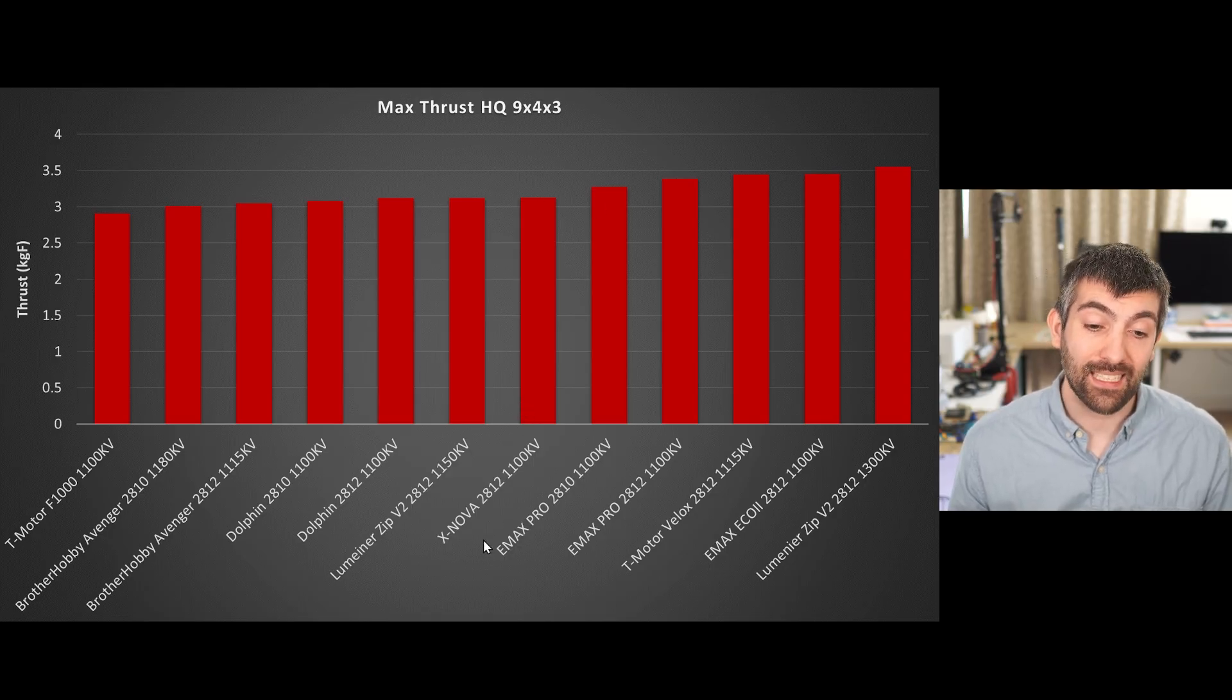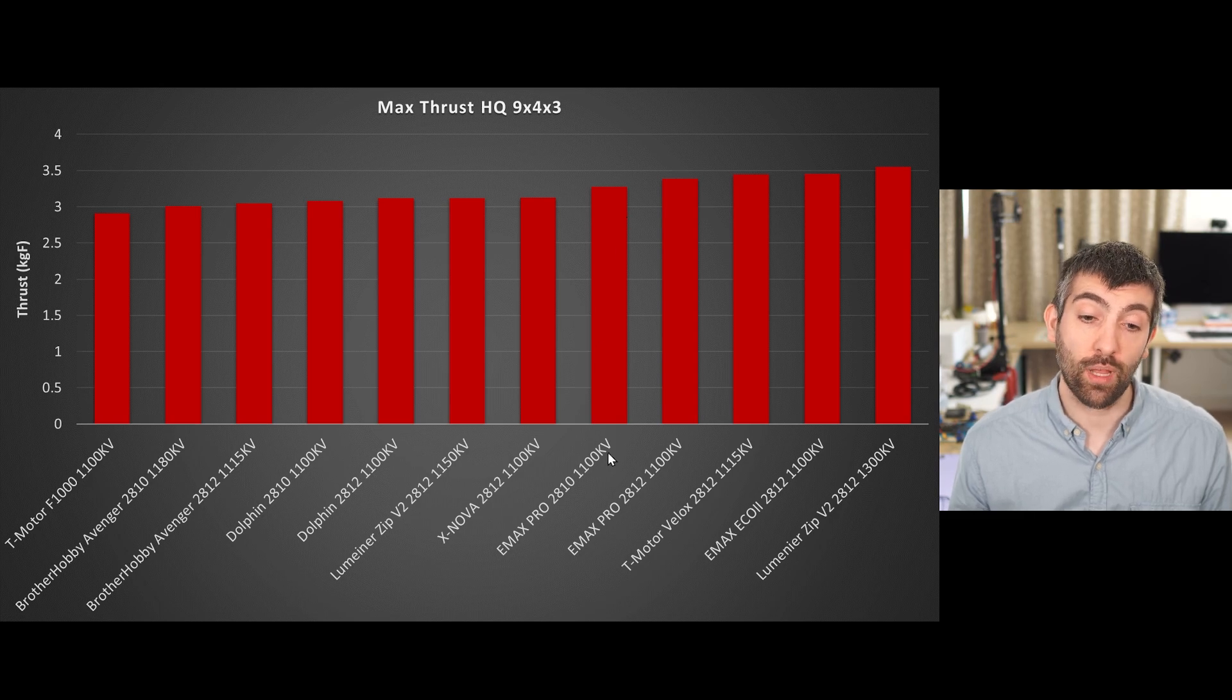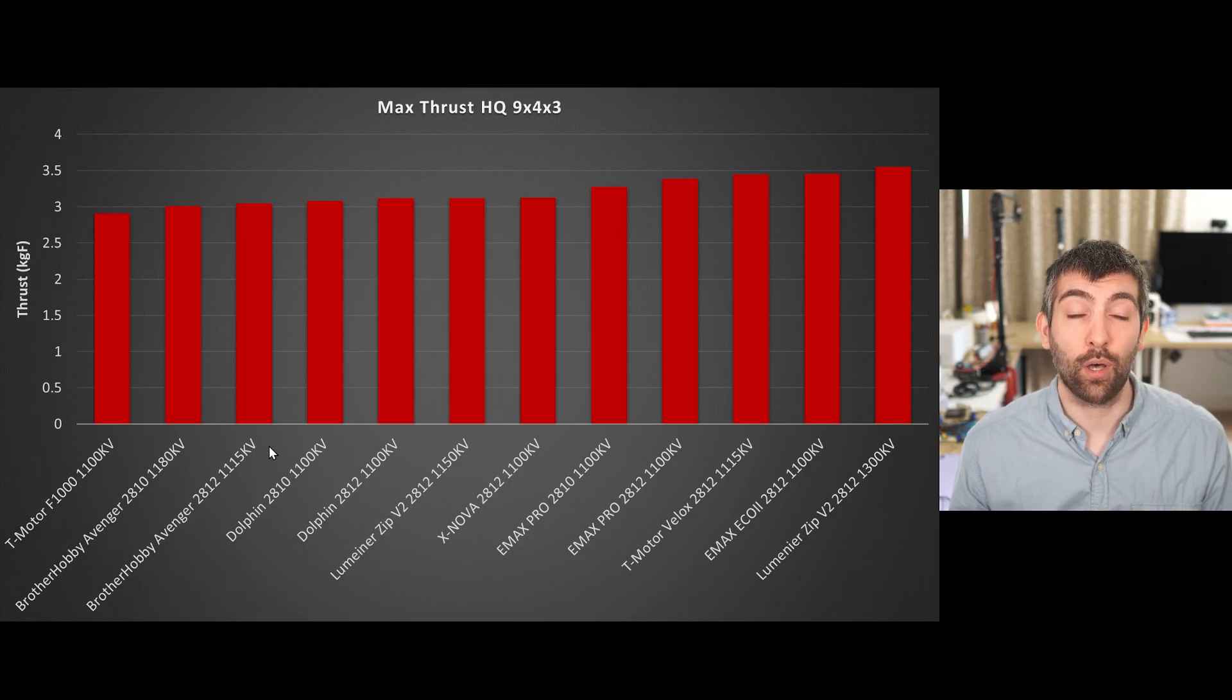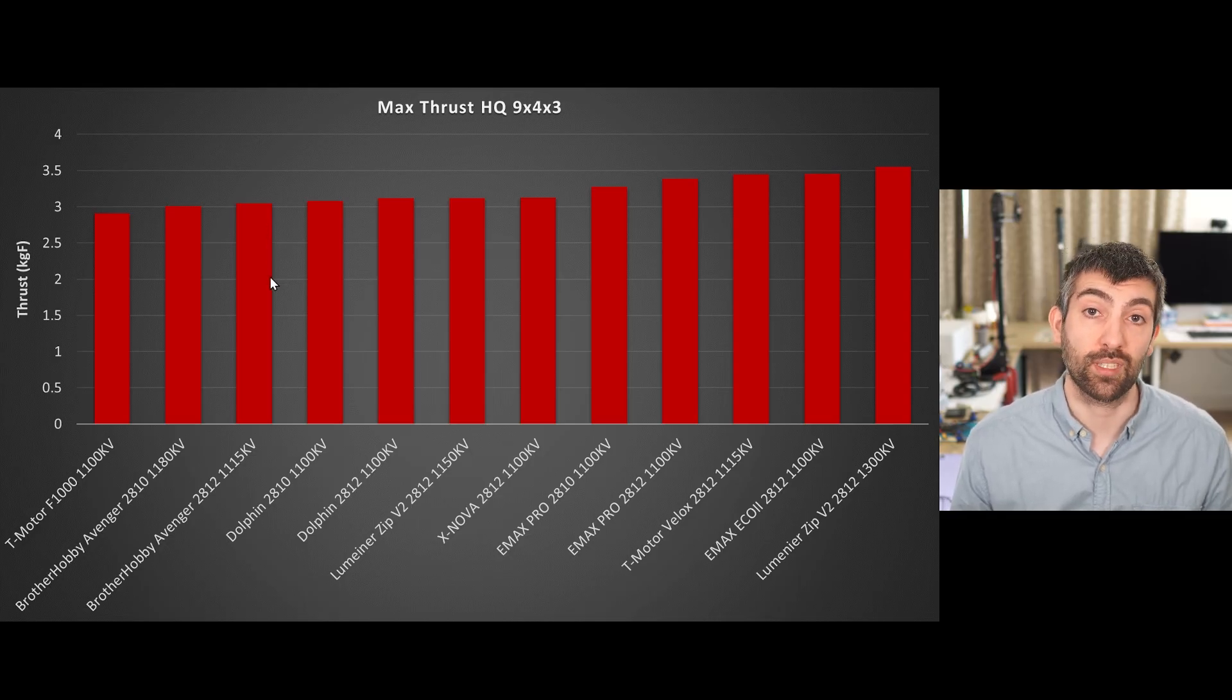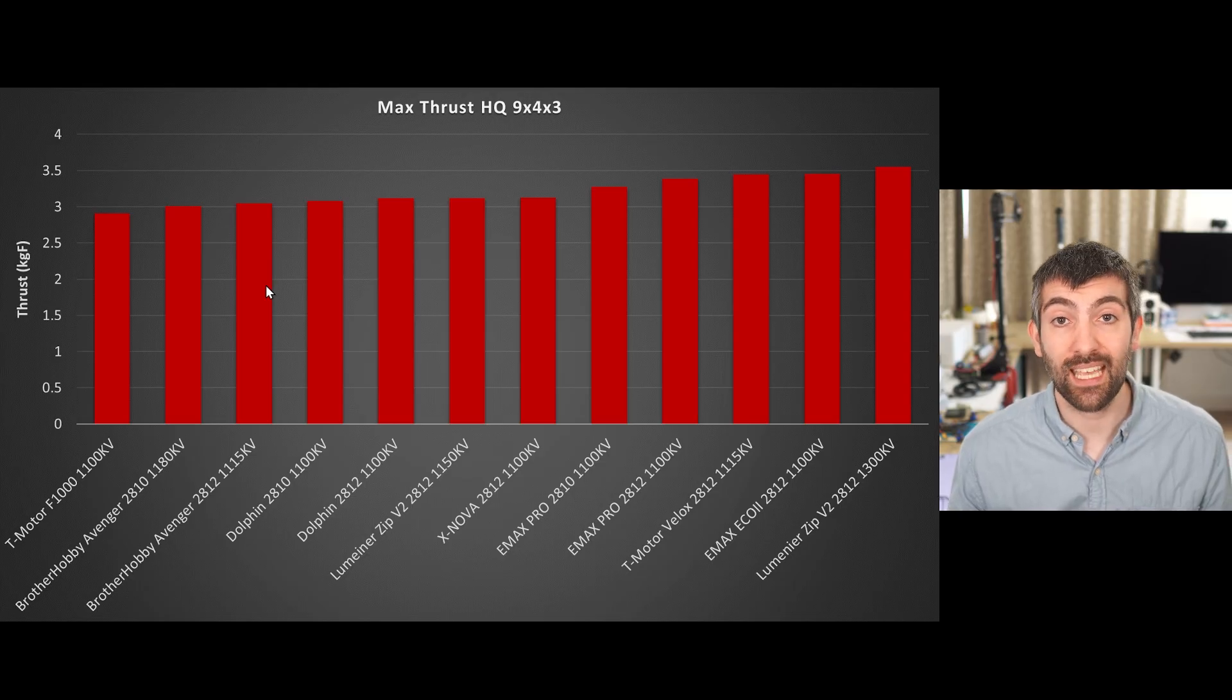In terms of the 2810s, the Emax Pro is doing really well delivering lots of maximum thrust considering it's a slightly smaller 2810 size motor. If we go down the bottom, the Brother Hobby Avenger 2812 is really struggling here. Despite being a larger motor, it's really in the middle of the pack of the 2810 size motors in terms of maximum thrust that it's able to deliver. So it's quite a big range of performance that we're seeing in terms of maximum thrust across all of these motors.